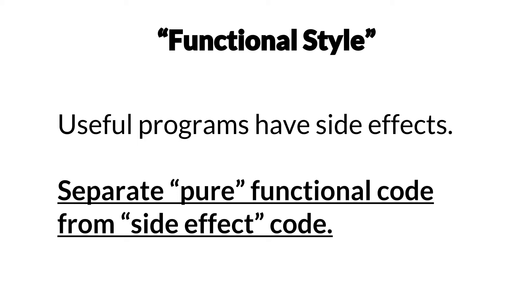But instead of thinking about it so radically, I think we should think about it more as a functional style of programming. While useful programs have side effects, we can still separate the functional code from the side-effects code. If we do that explicitly, it's going to be much easier to deal with the more pure functional code in our codebase, and then treat the side-effect code — the ones writing to the database and so on — a little bit differently. It makes everything else much easier to test, much easier to reason about. So instead of thinking about it radically, we should think about functional programming as a style or approach where we try to separate the parts that have side effects from the parts that don't.